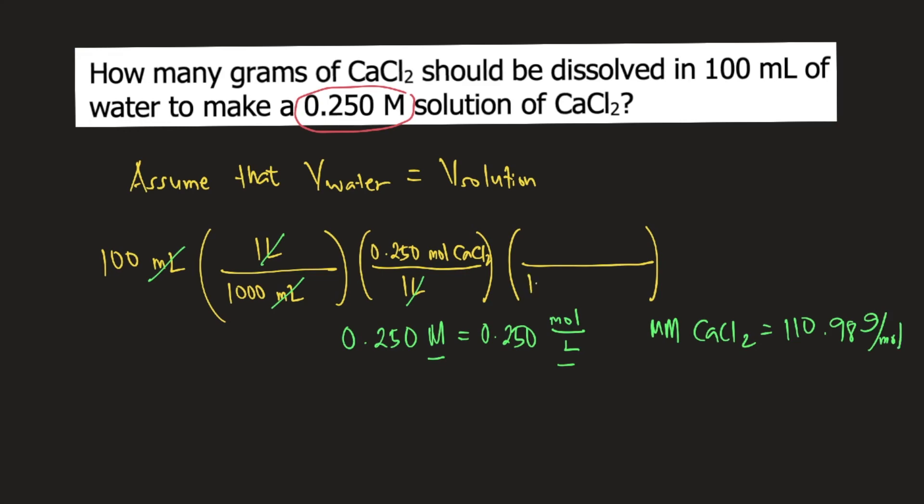So you put 1 mole of calcium chloride on the denominator, and on top you put 110.98 grams of calcium chloride. So moles of calcium chloride will cancel, and our final unit is grams calcium chloride.